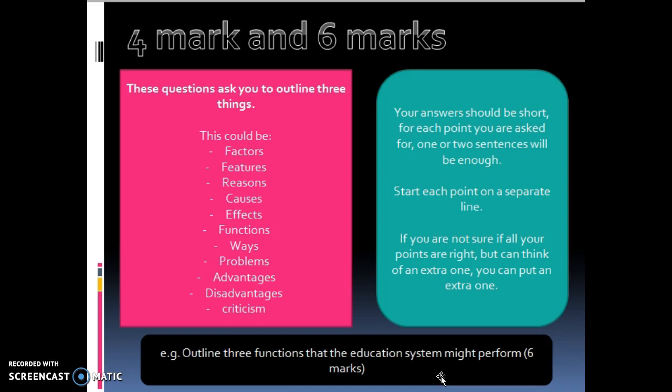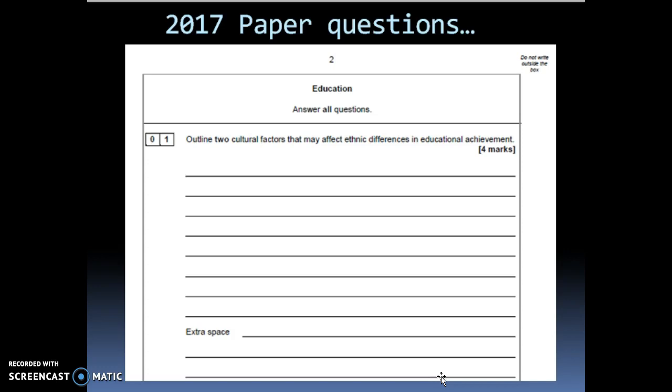I would predict that the majority of students should be able to answer these in less than that and that will just leave you a little bit more time to plan for the extended writing. So, let's have a look at the first 4 marker that was on the 2017 paper. This one was asking you to outline two cultural factors that may affect ethnic differences in educational achievement and this question has got three hooks.